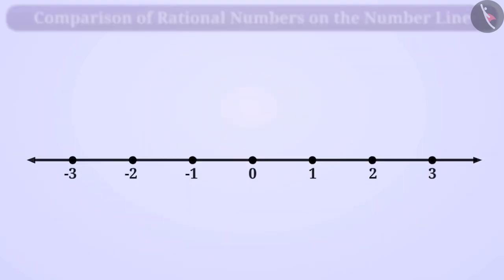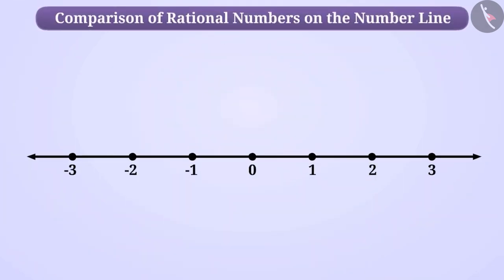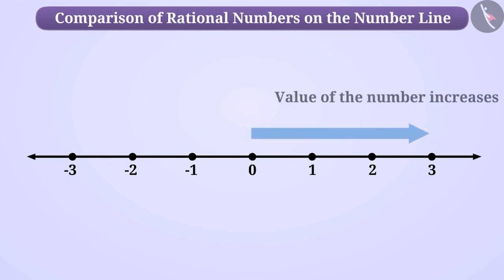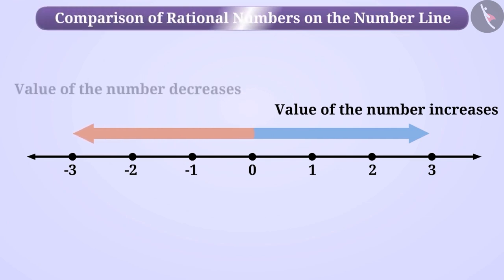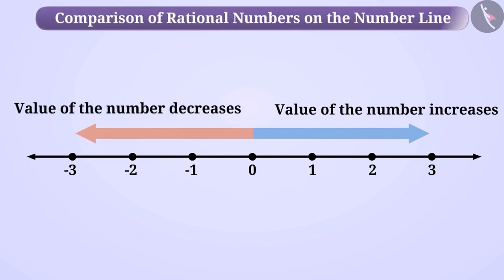We can compare rational numbers easily on a number line. On the number line, while the values of numbers increase towards the right, they decrease towards the left.